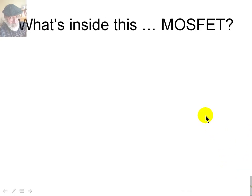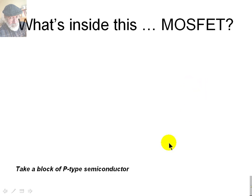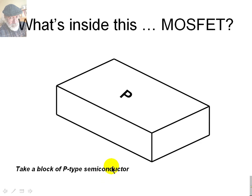So far, we have seen a little bit of how this MOSFET behaves. But the question is, what makes it behave like that? What's inside this MOSFET? Let's begin with a block of P-type semiconductor, lightly doped, a microscopic one, like this one.